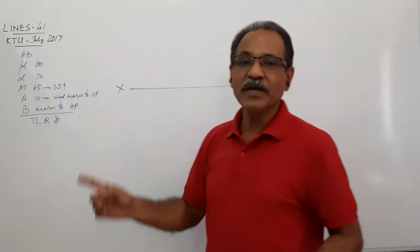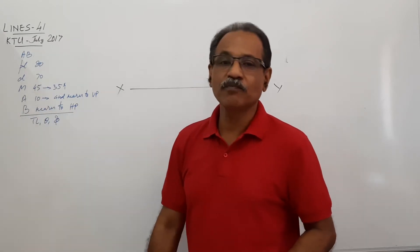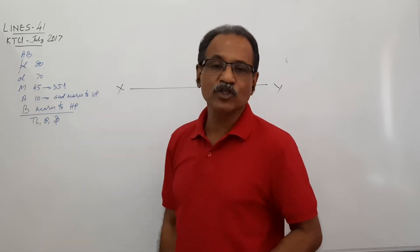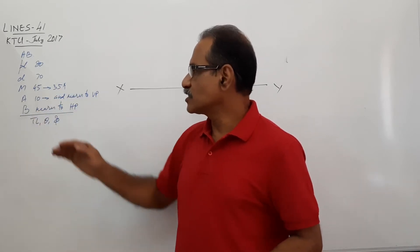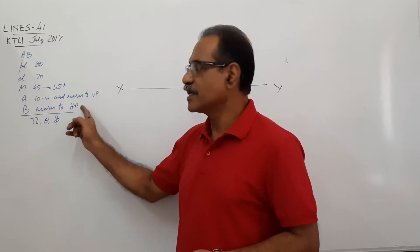Line AB has the plan length 80 mm, elevation length 70 mm. The midpoint M is 45 mm in front of VP and 35 mm above HP. A is 10 mm in front of VP and near to VP. B is near to HP.